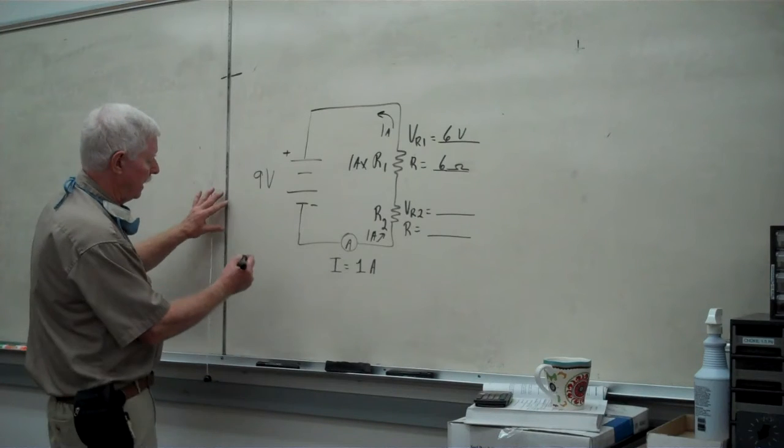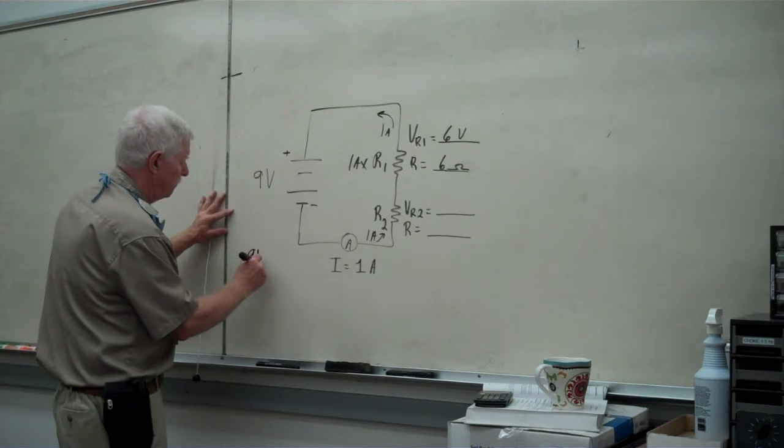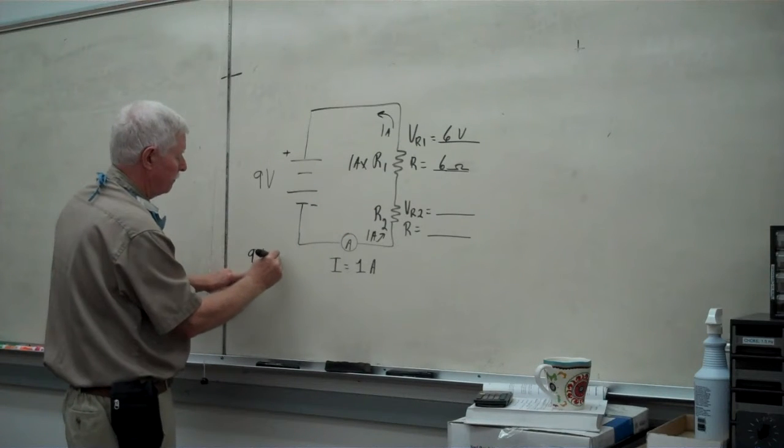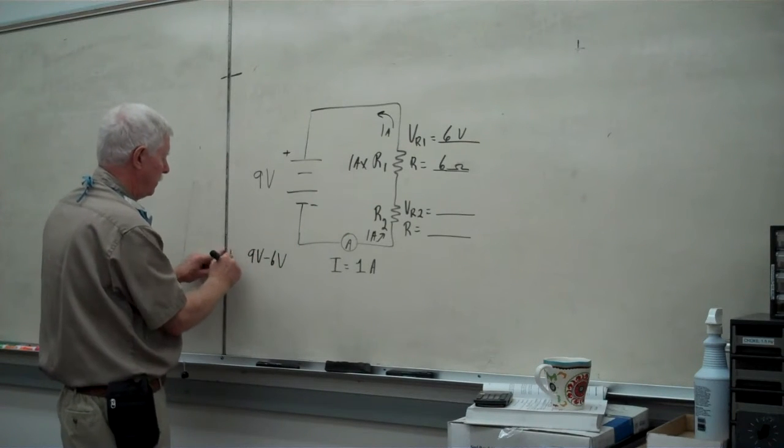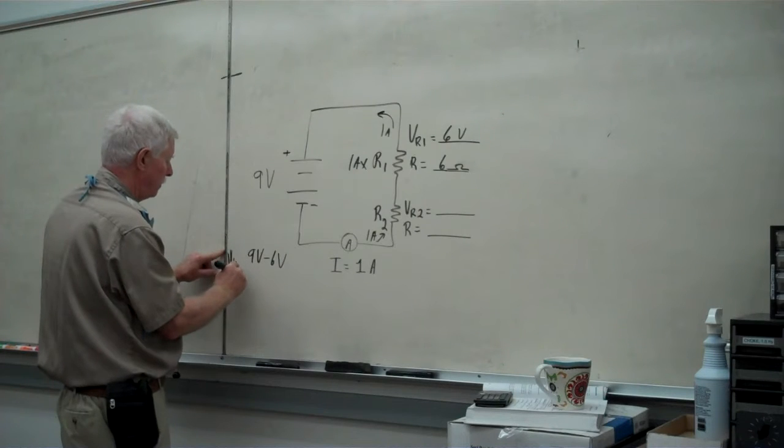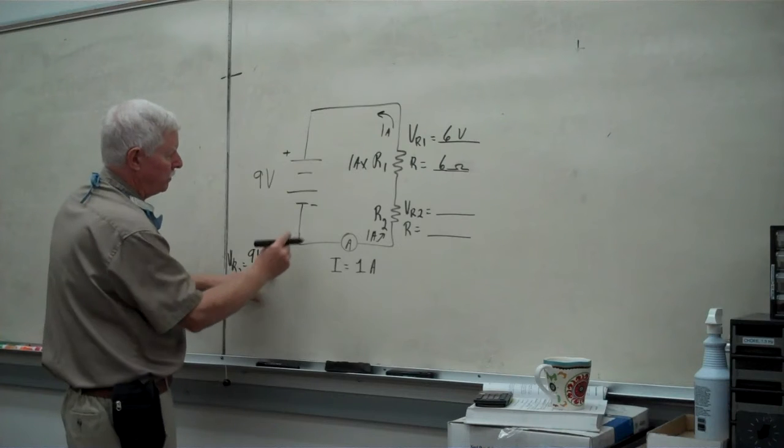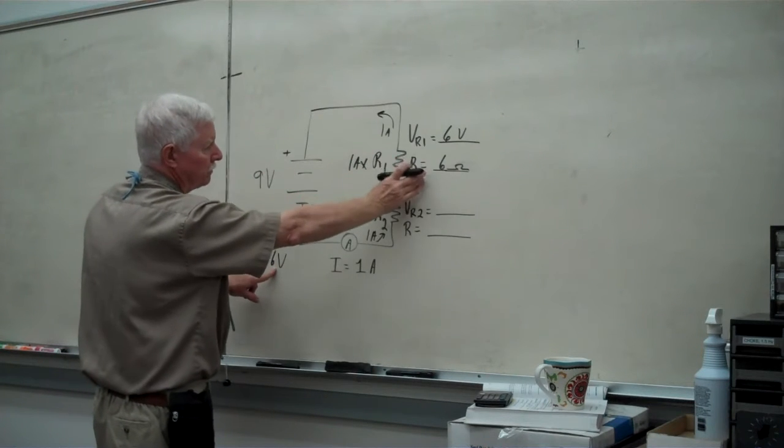So, taking a look at that, we have 9 volts, and we're going to subtract the 6 volts that we derived here in order to get V sub R2, which is this value right here. So, 9 minus 6 volts, 9 minus this one, 2 givens,